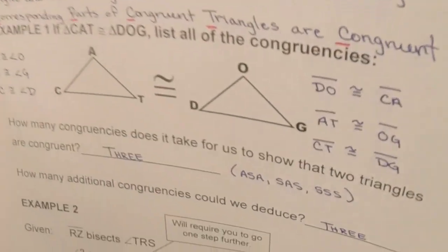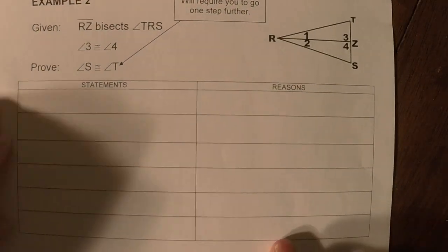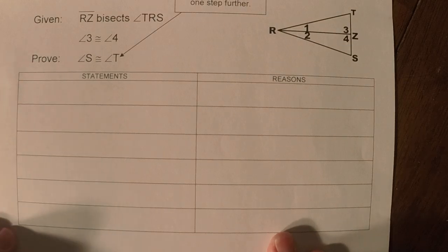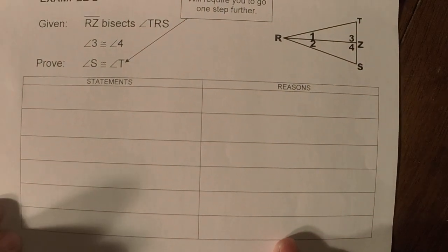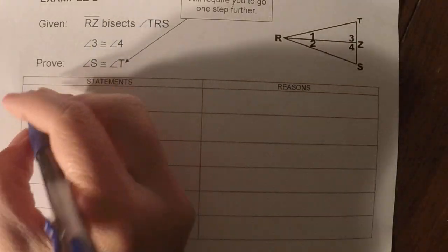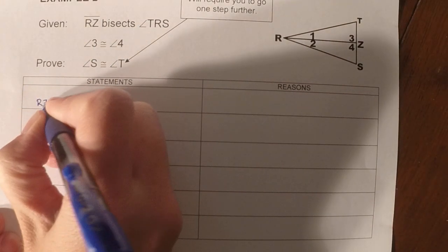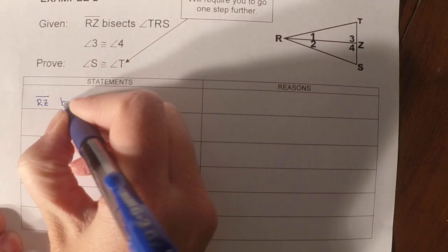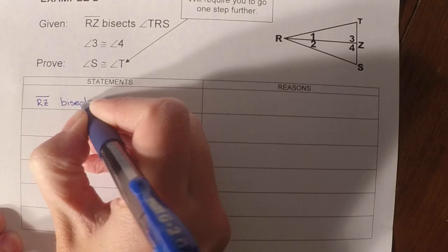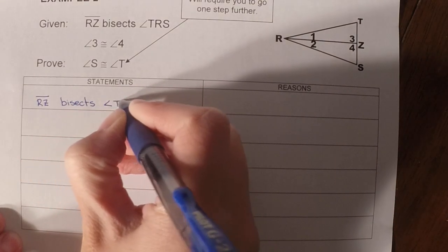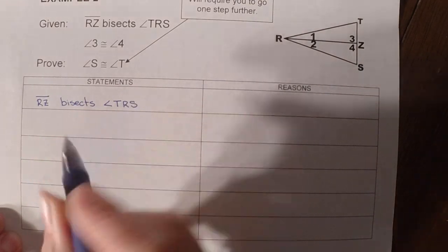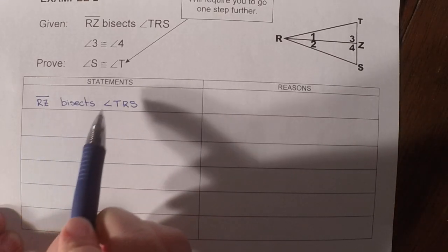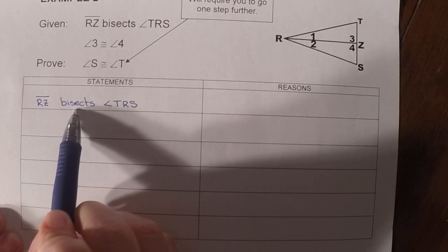So we're going to use that information in order to do one more step on our proofs. So let's look at example two. We're going to start just like we did last time. Remember, we start with our first given.